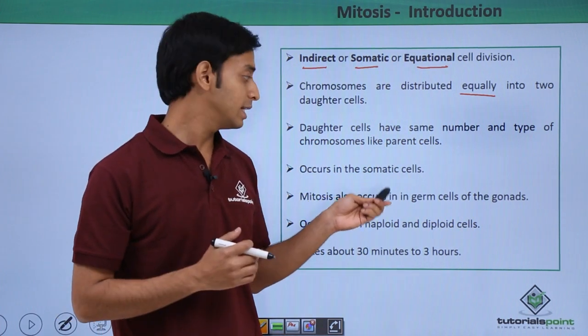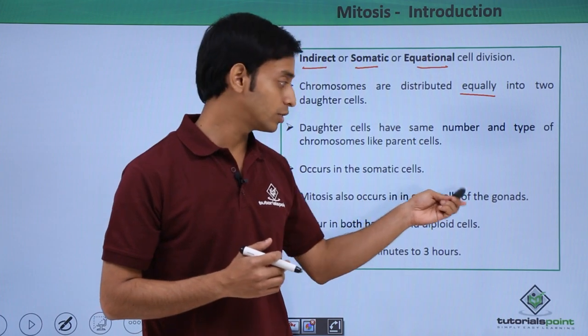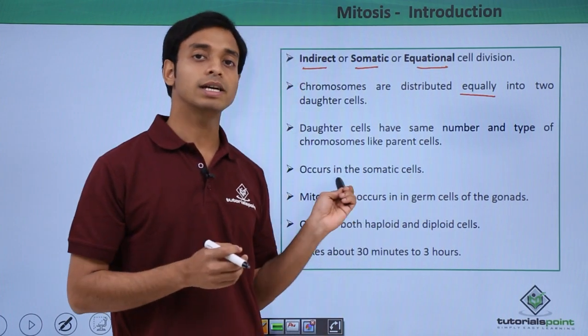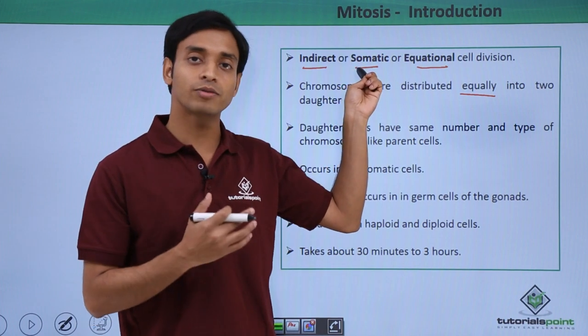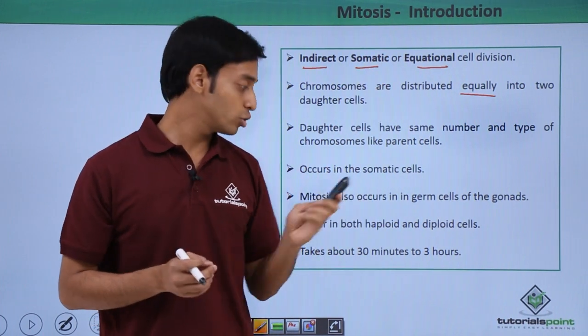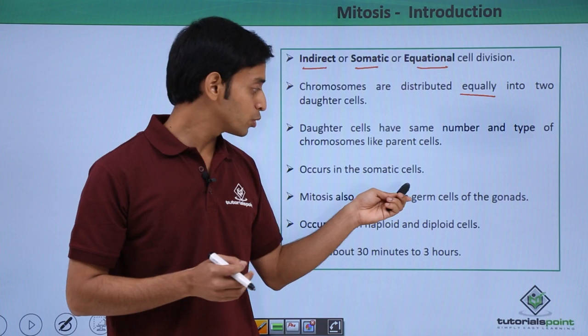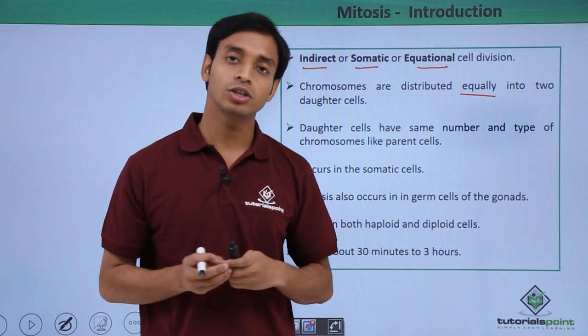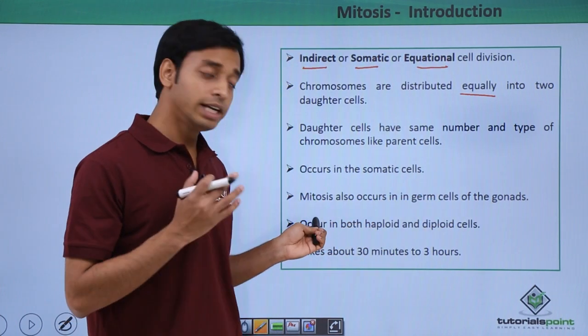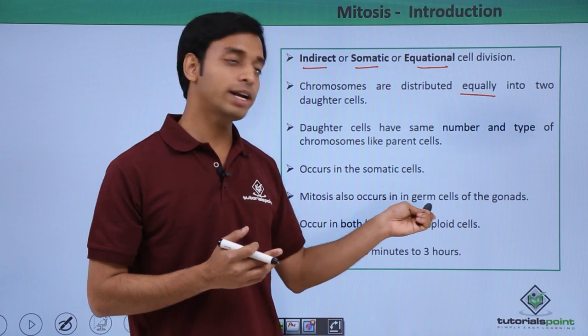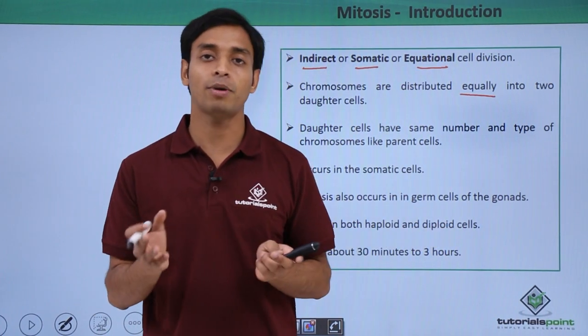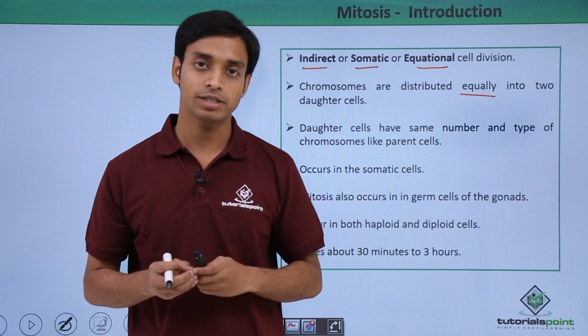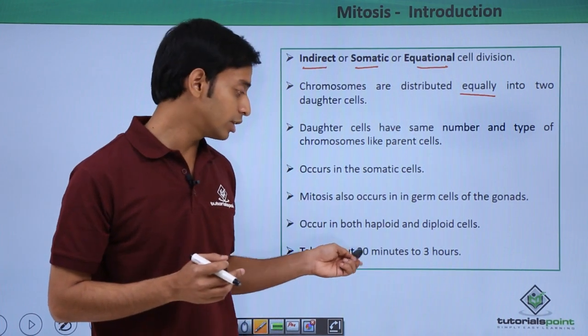Mitosis can also occur in some of the germ cells of the gonads. So this is an exception to the normal type of cells, because we have called it somatic cell division. It can occur in both haploid and diploid type of cells. So even if the cell is diploid or haploid, mitosis can take place. Mitosis takes about 30 minutes to about 3 hours.